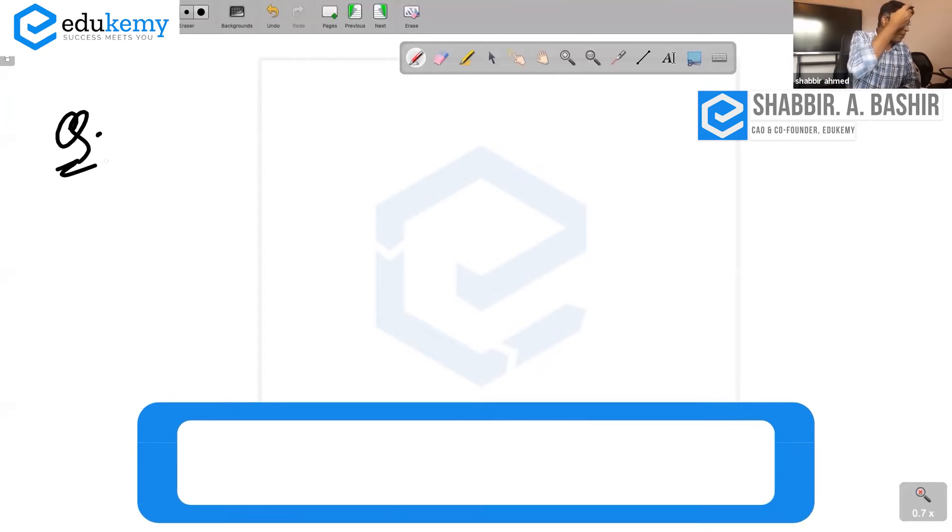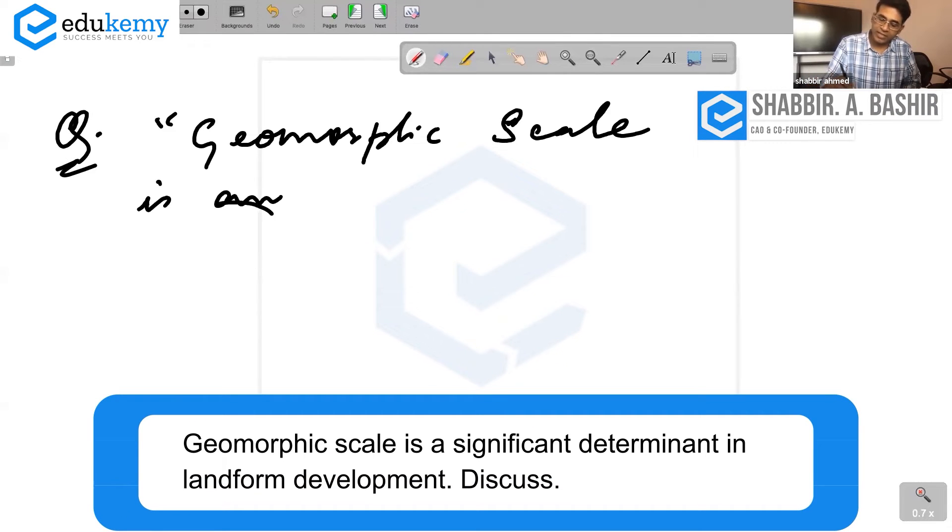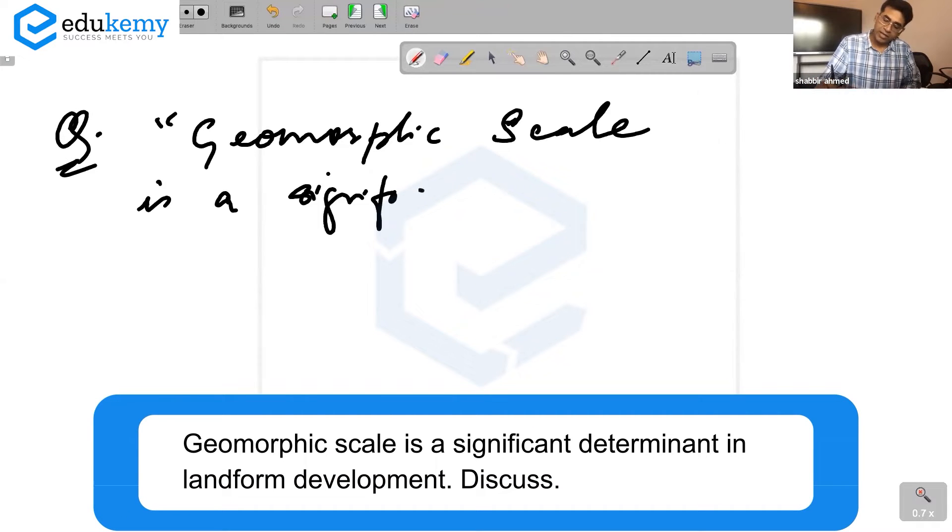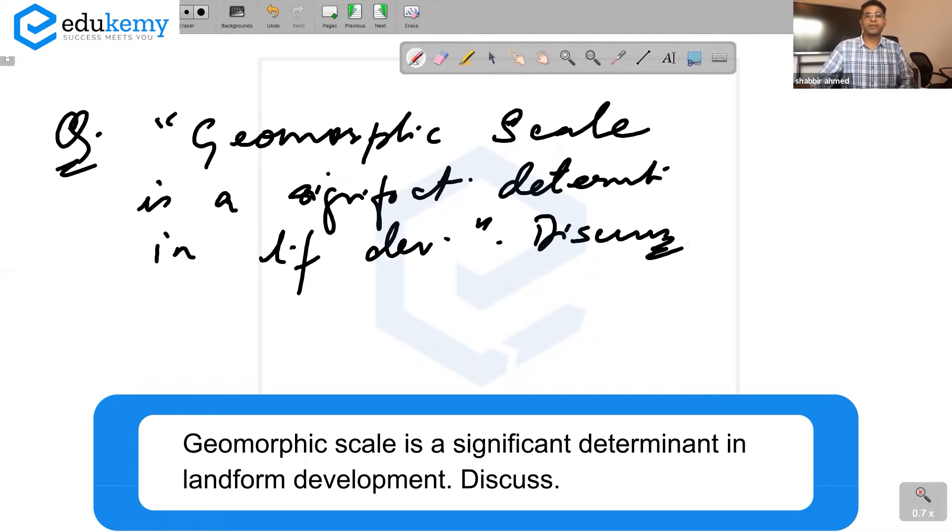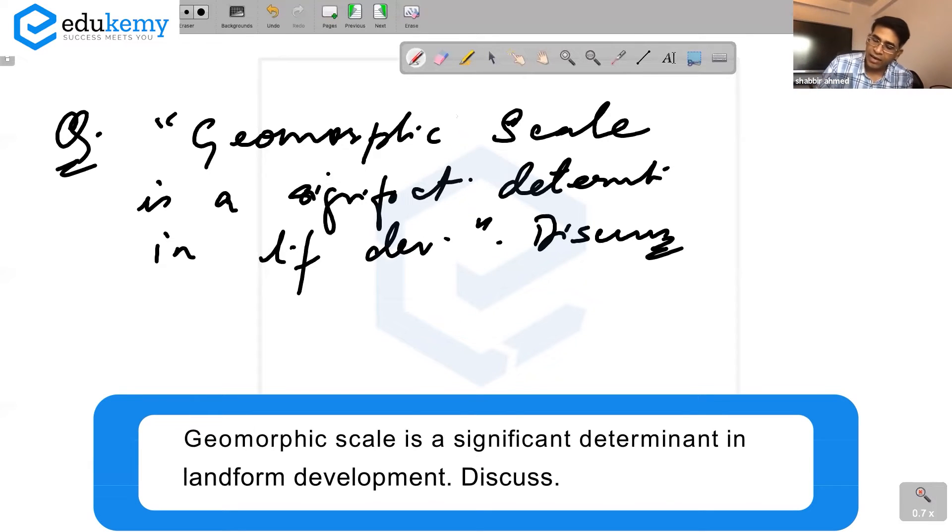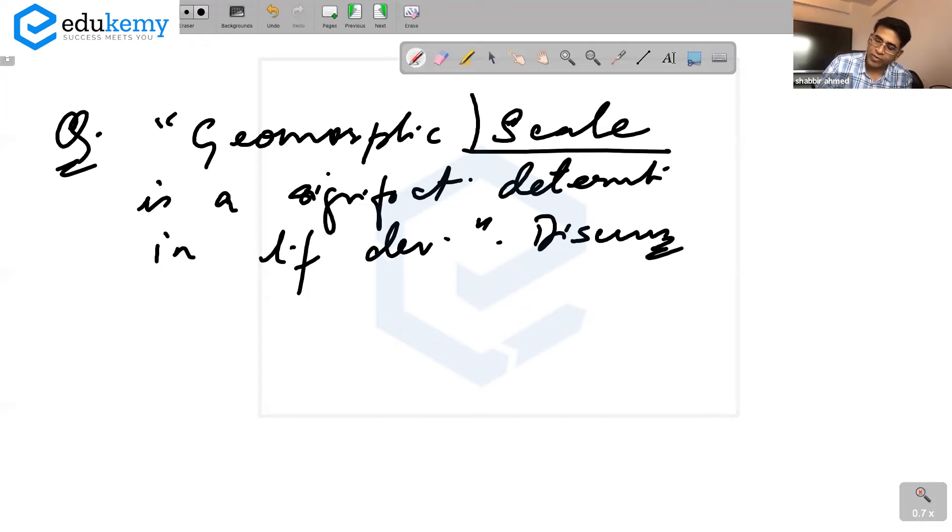Let's take up a question now: Geomorphic scale is a significant factor or determinant in landform development. Discuss. When I say scale, what am I referring to? Time, not in terms of size - time - but it also includes the idea of space.